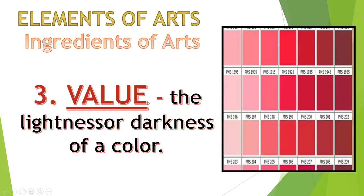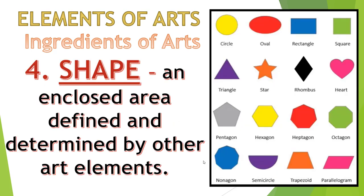Number three is value. Value is the lightness or darkness of a color. For example, with the color red, going from lightness to darkness you get: lighter, light, dark, darker, darkest — up to a very darkest color. That is value — the lightness or darkness of a color.